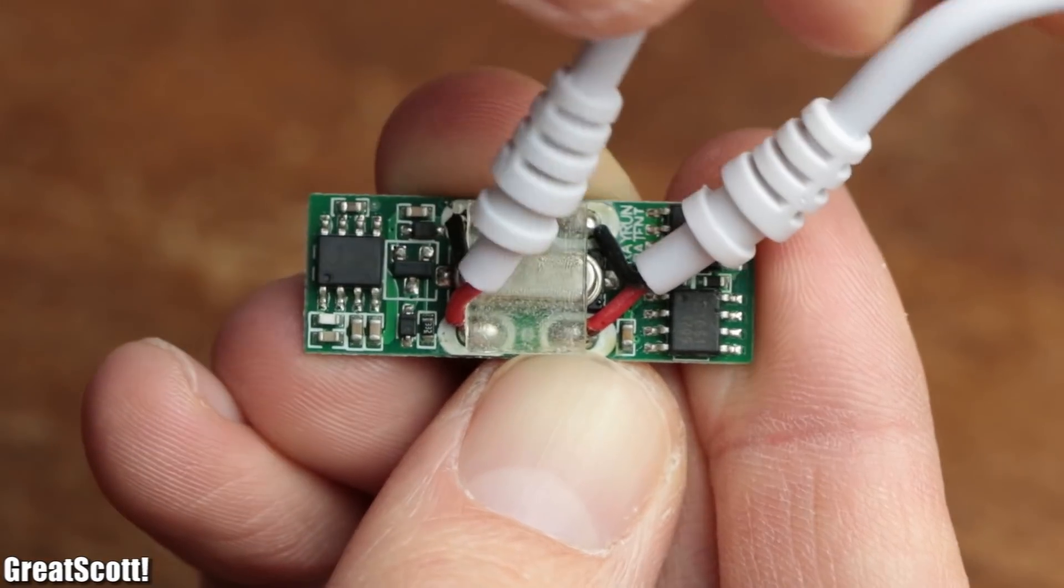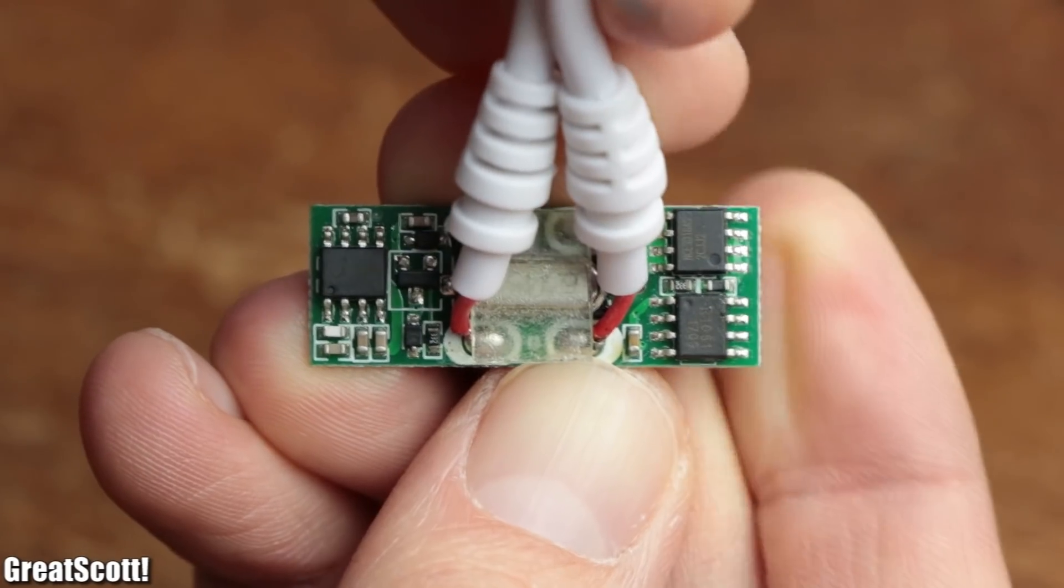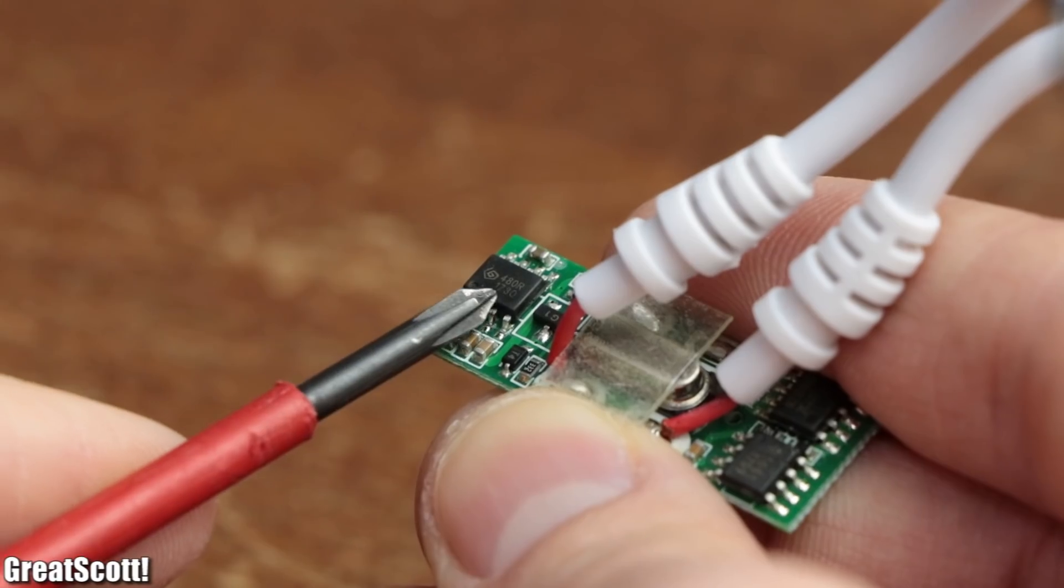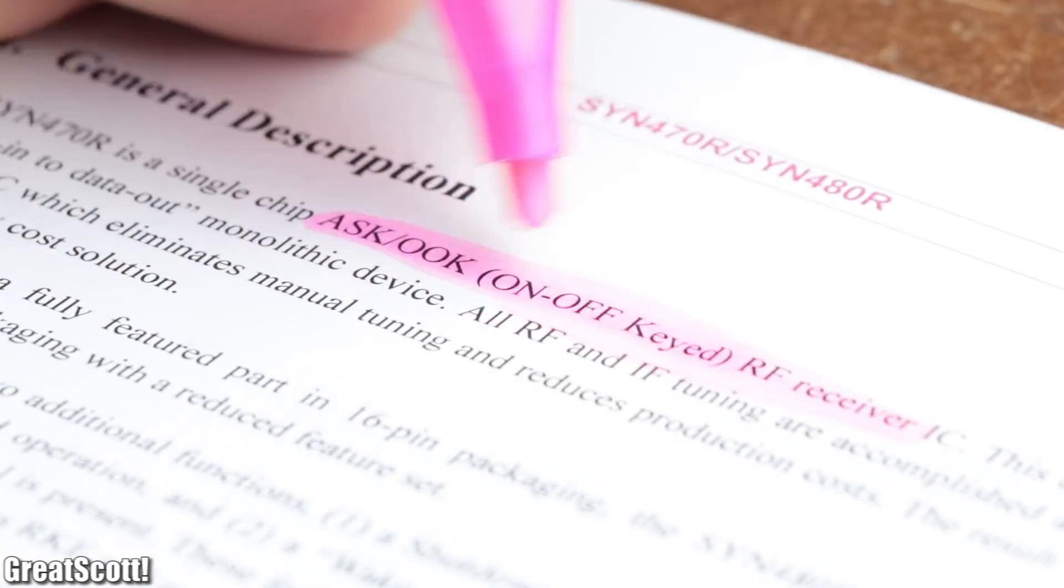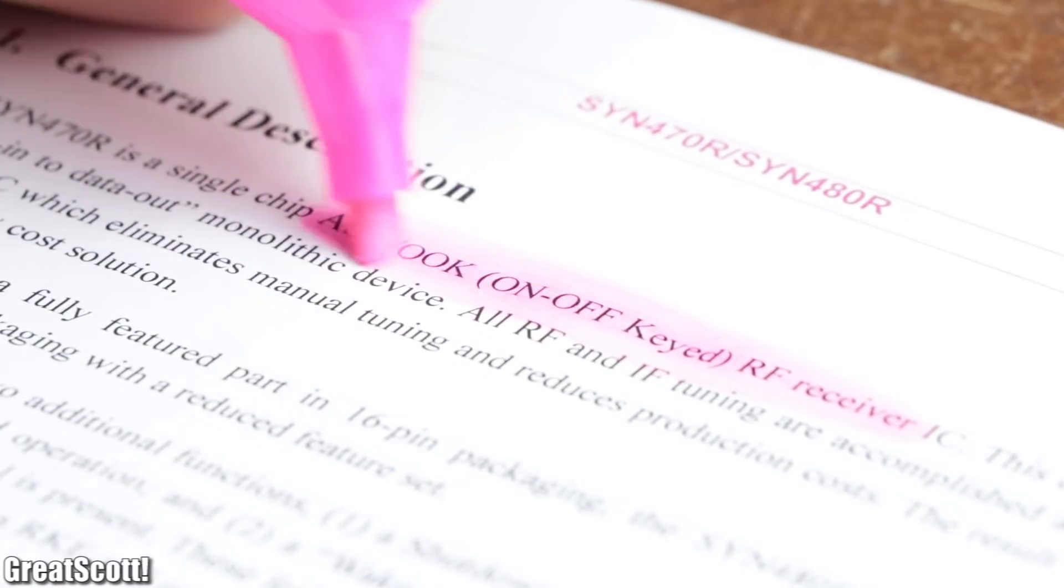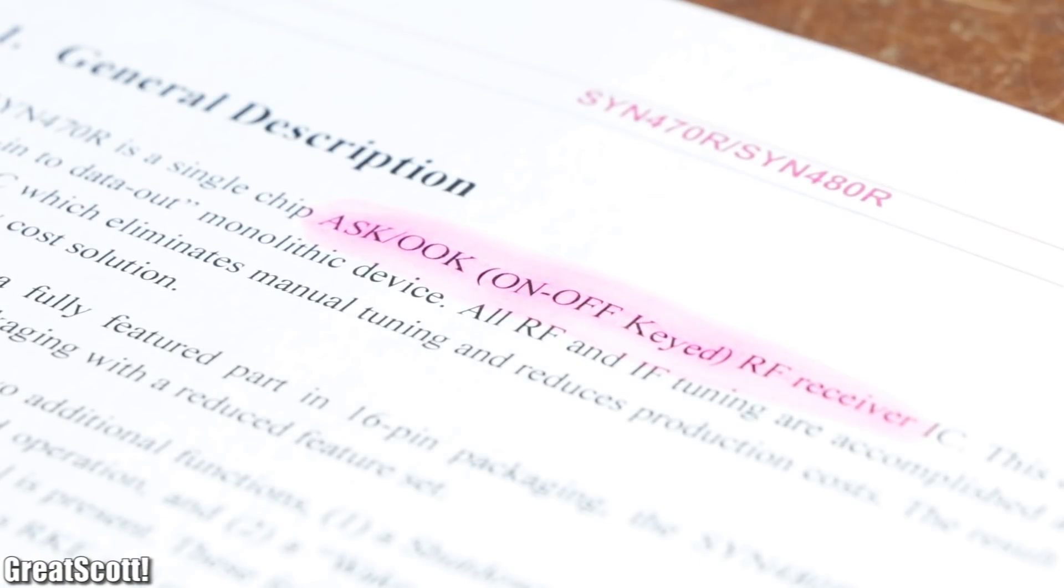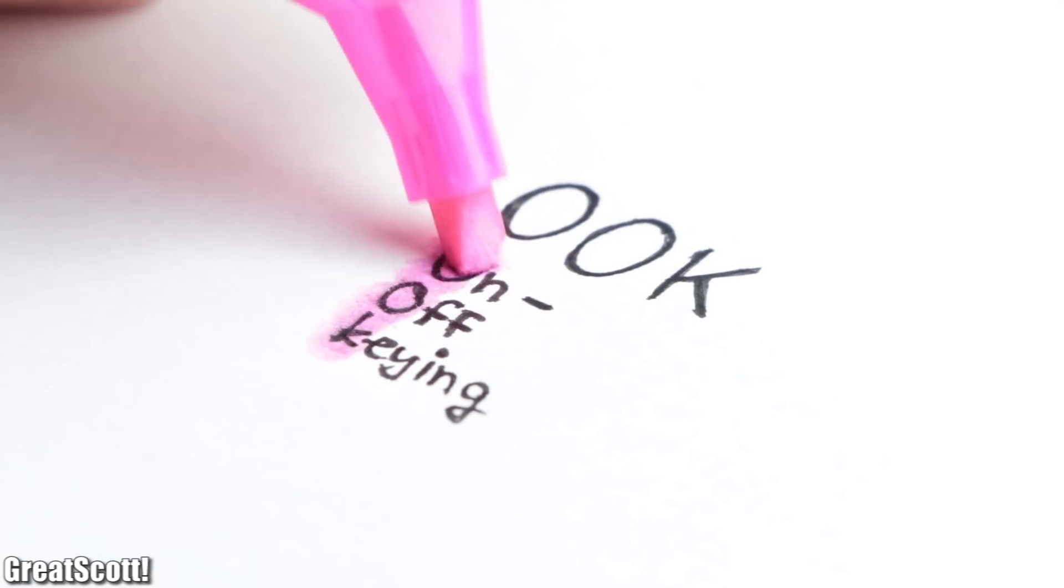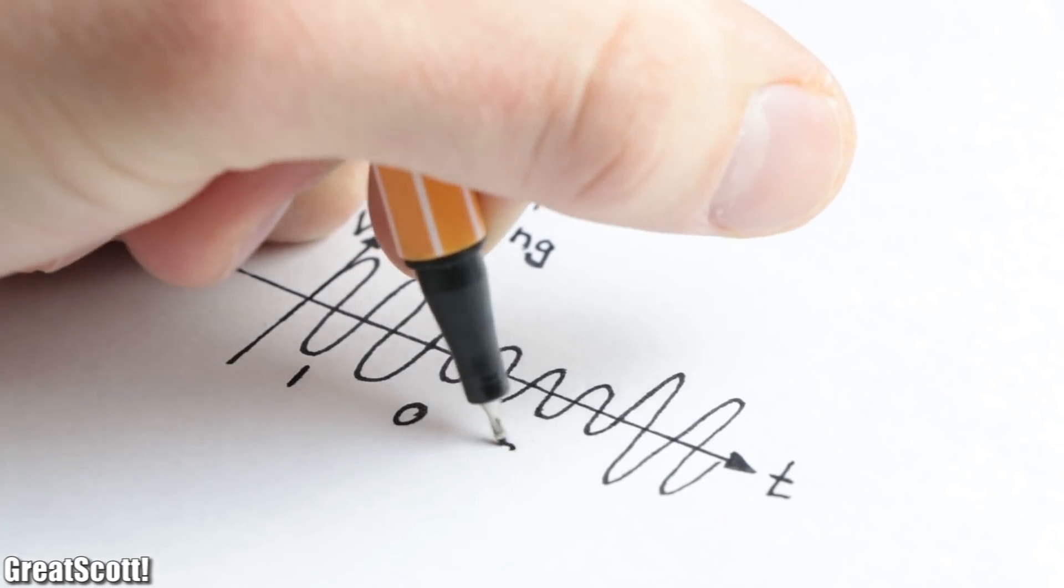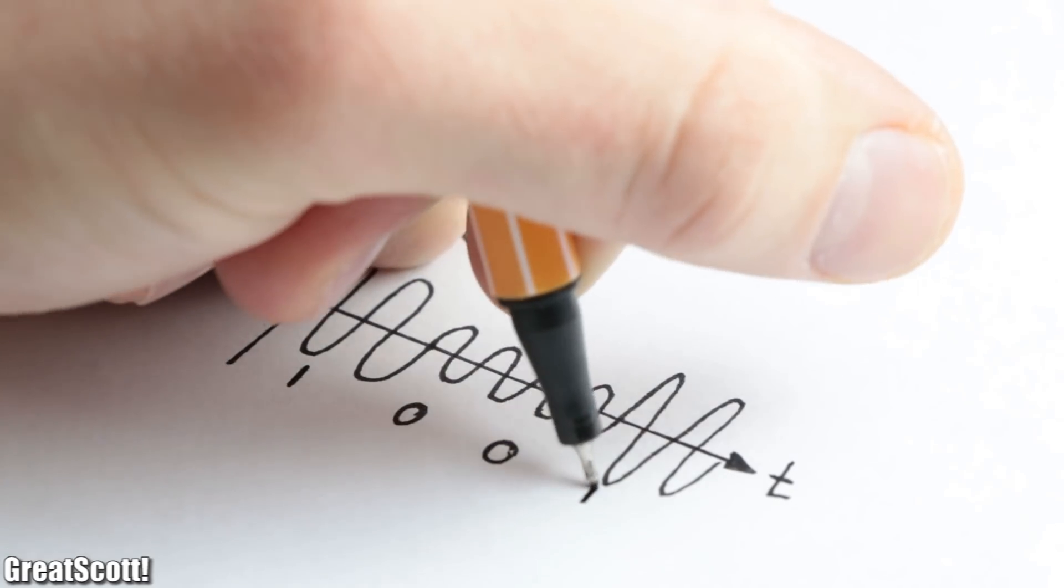Thankfully though while inspecting the three ICs of the RF receiver I noticed this 480R IC which according to its datasheet is an ASK OOK RF receiver. ASK stands for amplitude shift keying and OOK for on off keying which are two methods used to send 1 and 0 bits through an RF signal.